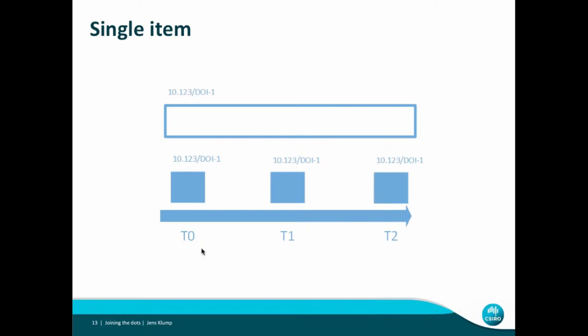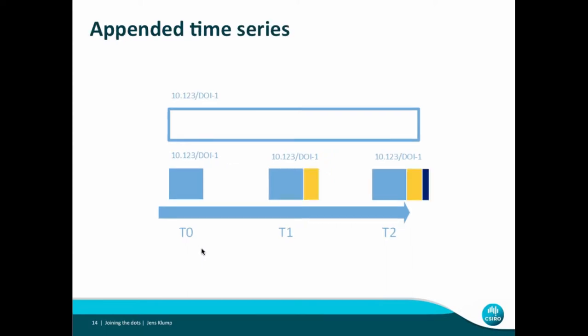Going through some use cases of digital object identifiers: the first and easiest is a single item produced at time t0 — we go back at t1 and t2 and it hasn't changed. We give it one name, we can always refer to it, and the resolving service will point us to its location. For a time series, it starts at t1, we access it at t0 and t1, and then something is appended. When we return at t2, more has been appended, but the past record hasn't changed — and that's an important point.